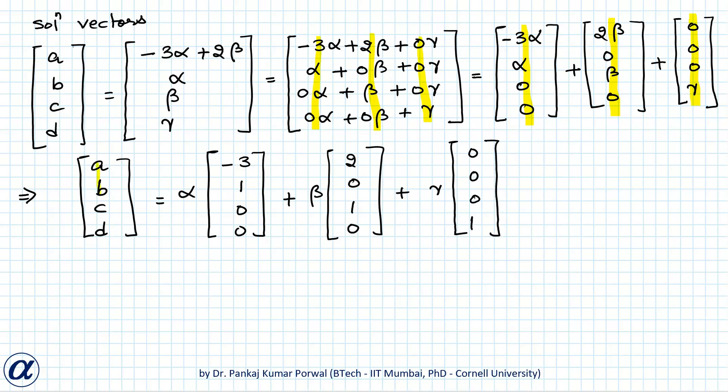So my solution vector consists of linear combination of three vectors, so the dimension of my solution space V is 3 and the basis consists of the three vectors: (−3, 1, 0, 0), (2, 0, 1, 0), and (0, 0, 0, 1).